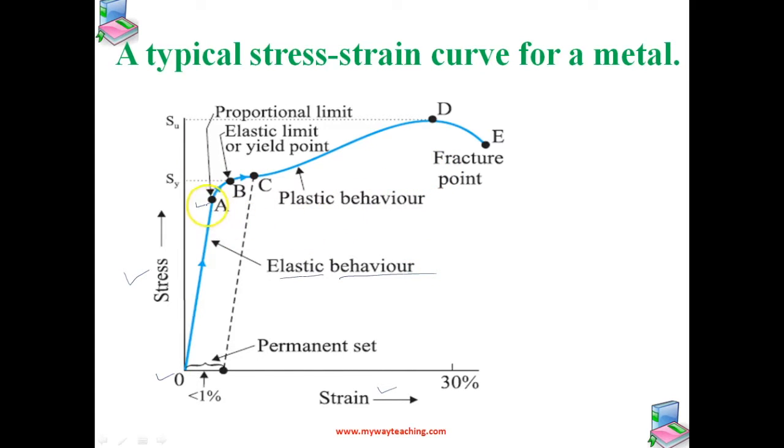In the region from A to B, stress and strain are not proportional. Nevertheless, the body still returns to its original dimension when the load is removed. Point B is known as the yield point or elastic limit. Up to here, it obeys the elastic property. The corresponding stress is known as yield strength of the material.